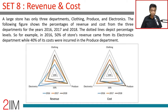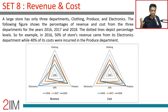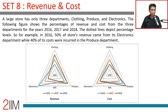A large store has only three departments: clothing, produce, and electronics. I'm going to give you a big giveaway — as far as scatter questions go, anything with these weird charts, jump into it and solve it. From what we've seen from the last week, there's going to be one priority. It might not work in 2020, but this is a big giveaway. These types of data presentation look weird but the questions are very solvable.